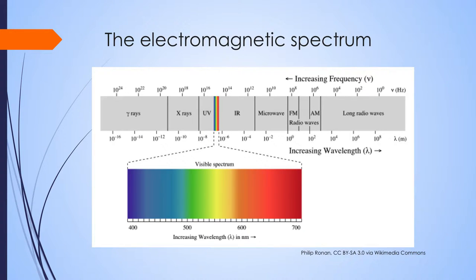Light is electromagnetic radiation. There are many forms of electromagnetic radiation, and in particular the visible light is what we call the visible spectrum. But gamma rays, x-rays, ultraviolet light, infrared, microwave, and radio waves are all other forms of electromagnetic radiation that aren't detected by the eye. The shorter wavelengths of light, blue and violet, and the middle wavelengths of light, green, yellow, orange, and the long wavelengths of light, red, are all detected in the eye.